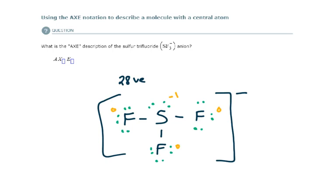So what is the AXE notation? Well, A represents the central atom, sulfur, which I only have one of those. And X represents atoms bonded to the central atom. I have 1, 2, 3. So my AXE notation would be A, X3. E represents lone pairs around this central atom, not lone pairs around these atoms. So I have 1 lone pair, 2, 2 lone pairs. So AX3E2.